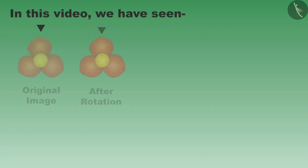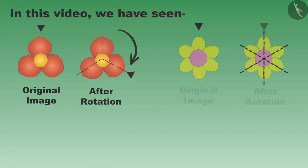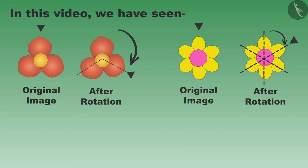this video we have seen some objects and shapes that do not change their shape even after one-third and one-sixth rotation. These objects have one-third (that is, 1/3) rotational symmetry and one-sixth (that is, 1/6) rotational symmetry.